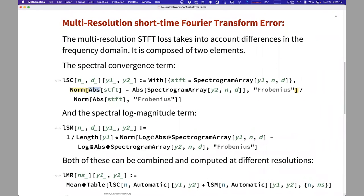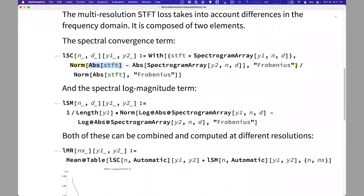that compares two short-time Fourier transforms, looks at the norm, and divides by the norm, and then the spectral log magnitude term that just takes logs.